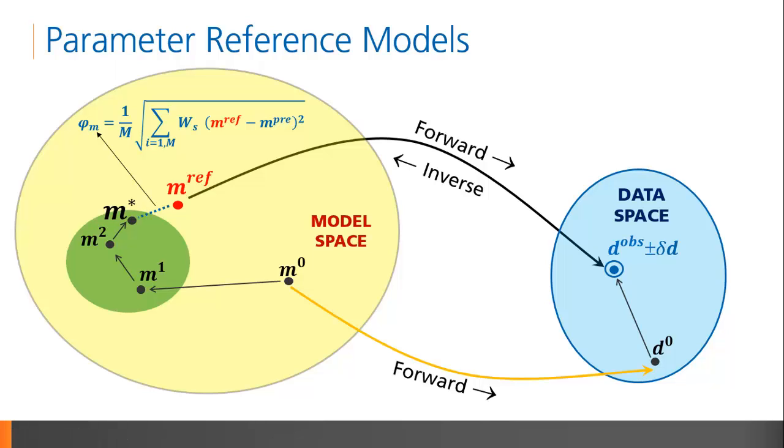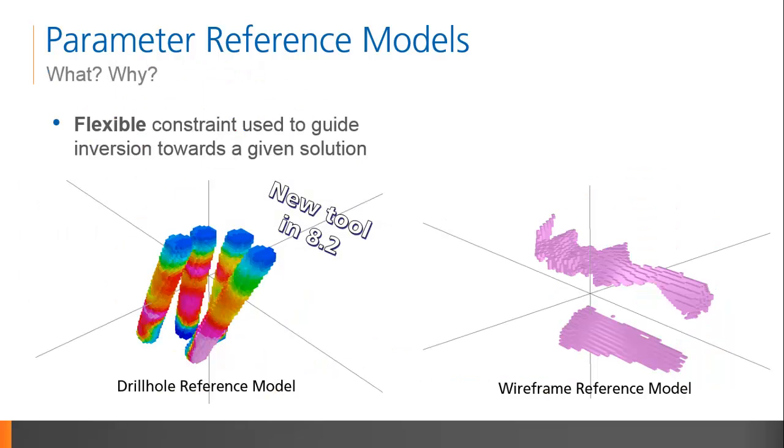The reference model is always specified, and is by default full of zeros. When you change the default from the null model, you should incorporate some a priori knowledge about the volume of interest. It is important to note that the rock property values you enter into the reference model must be consistent with the background you've removed in your modeling. For example, a parameter reference model for a gravity inversion should contain densities that are relative to the background density removed during the complete Bouguet correction. The parameter reference model can be represented as a wireframe reference model, as a drill hole reference model, or a simple geometric one.